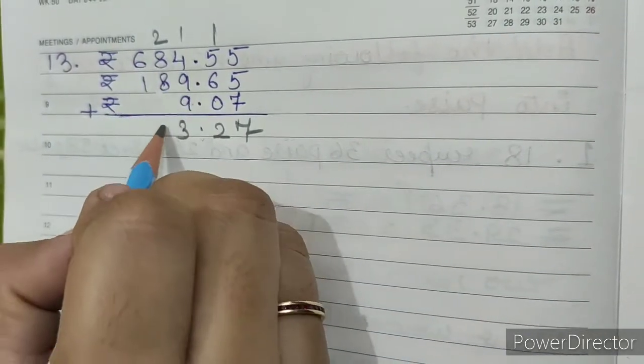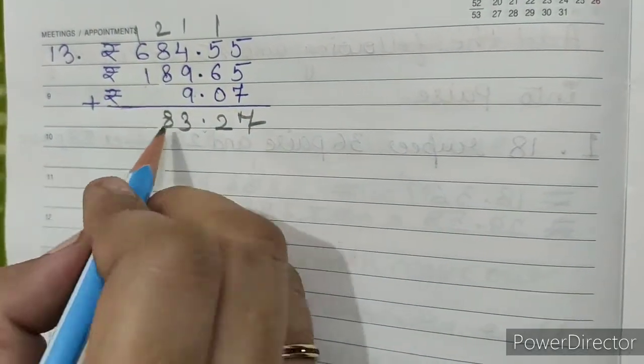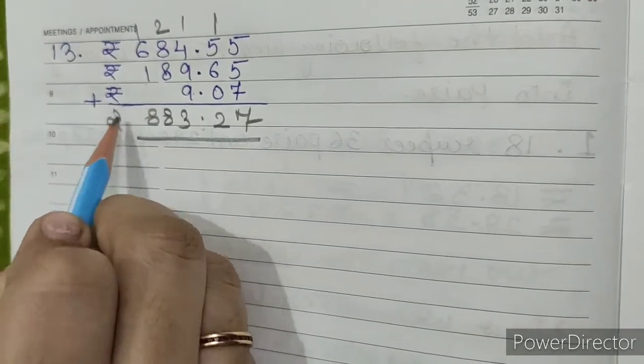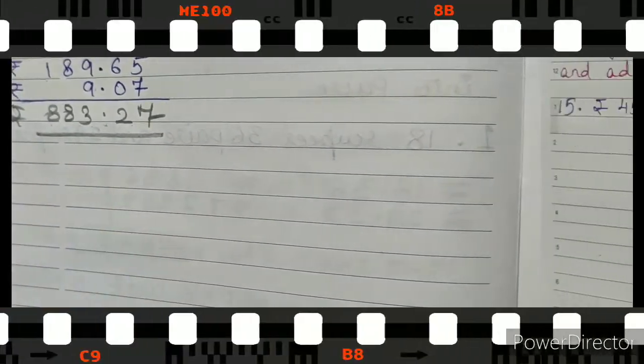8 plus 8 equals 16, plus 2 equals 18, write 8 carry 1. 6 plus 2 equals 8. So our answer is 883.27.